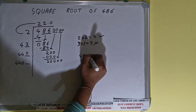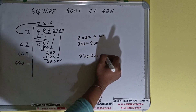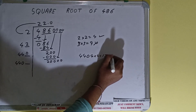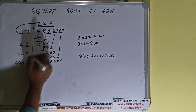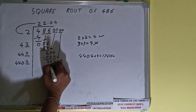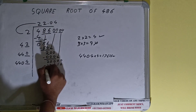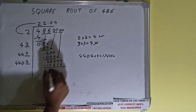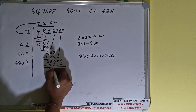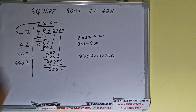Compare 44 with 200: 44 times 5 gives 220, so we cannot try five — we have to try four times. 4404 into 4 gives 17,616, which is good to take. So four here and four here gives 17,616. Subtract it and 2,384 will be left.